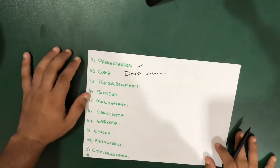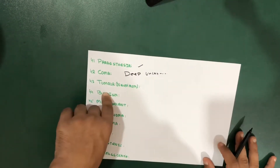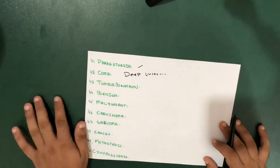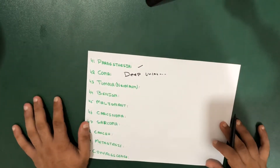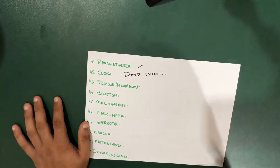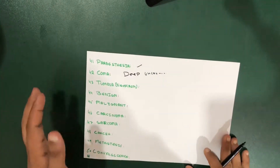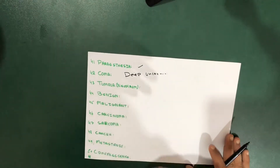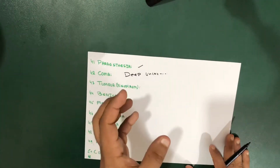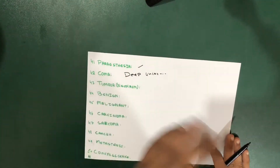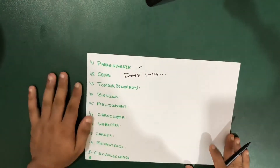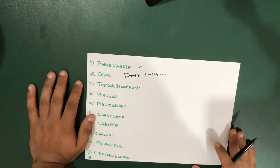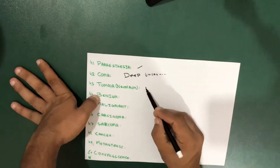Another word we have is tumor, also called neoplasm. It's actually the non-inflammatory abnormal growth arising from body tissue — the body tissue or cell number increases. That tissue part increases. It's non-inflammatory, so it's a kind of abnormal growth of your cells.